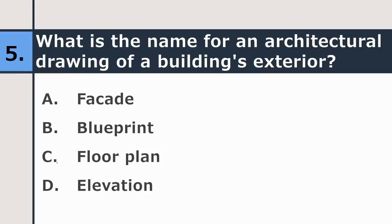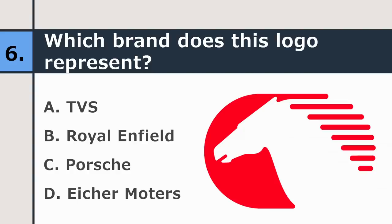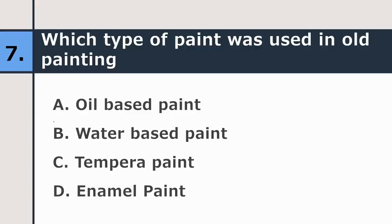Fifth question: what is the name of the architectural drawing of a building's exterior facade — blueprint, floor plan, or elevation? The correct answer is elevation. Sixth question: which brand does this logo represent — TVS, Royal Enfield, Porsche, or Eicher Motors? The correct answer is Eicher Motors.